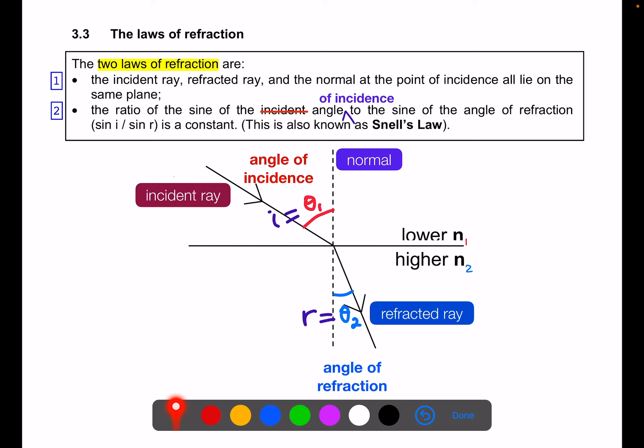Two, the ratio of the sine of the angle of incidence to the sine of the angle of refraction is a constant, and this is known as Snell's law. We'll look at this later.